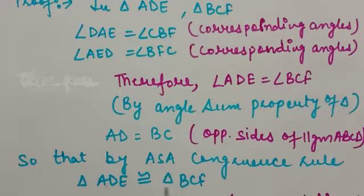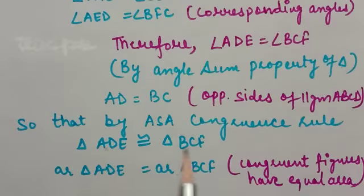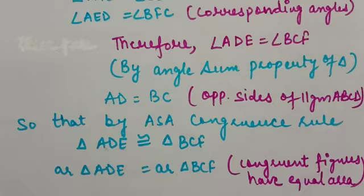Both triangles are congruent. We know that if two triangles are congruent, they are equal in area — congruent figures have equal area. Note that the vice versa is not true: if two triangles are equal in area, it is not compulsory that they are congruent. So, congruent triangles → equal area, but not necessarily the reverse.